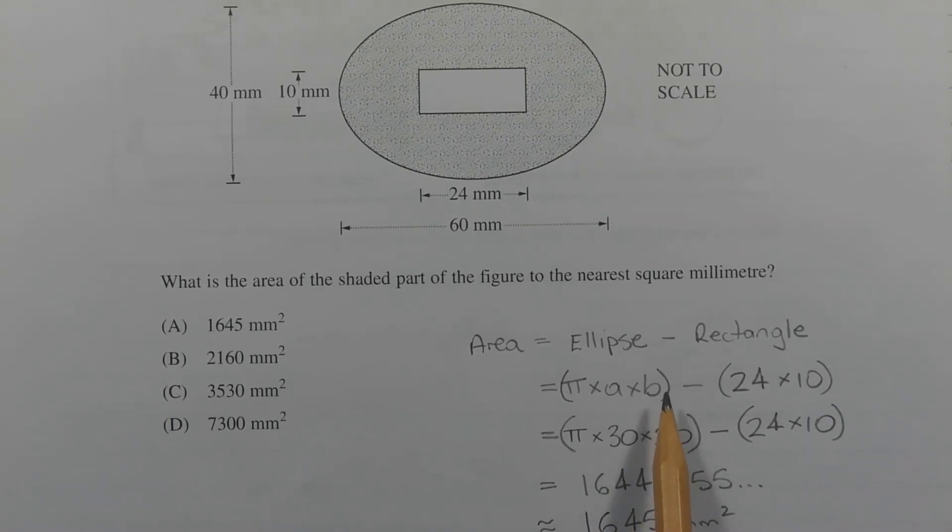And b is half the length of the short axis, and in this case, the short axis is 40mm, so half of 40mm is 20mm, so b is equal to 20.